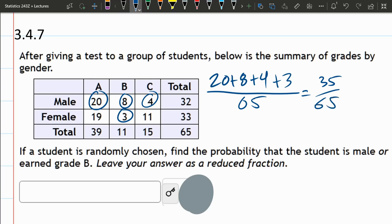And they want reduced fraction. This does reduce. We're both divisible by 5. 13? So we'll find out. Oh, look at that. All right.